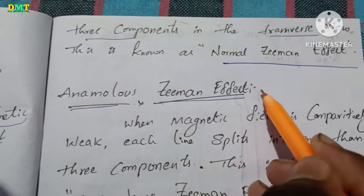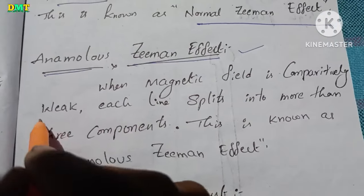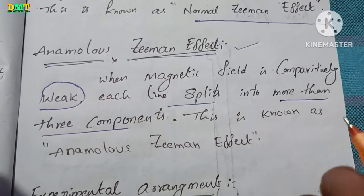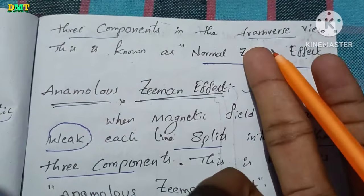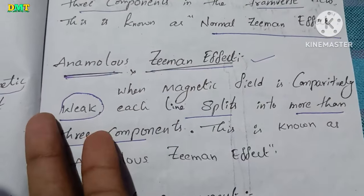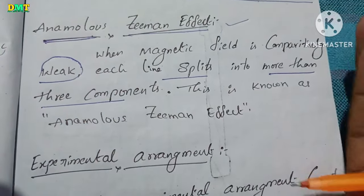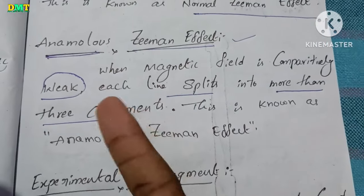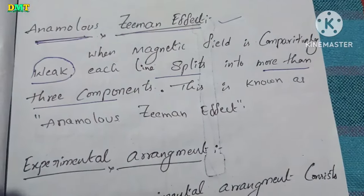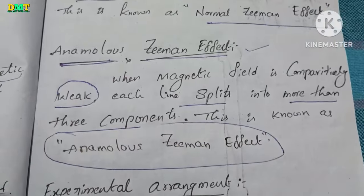Anomalous Zeeman Effect: when the magnetic field is weak, each spectral line splits into more than three components. In the Normal Zeeman Effect there are three components, but in the Anomalous Zeeman Effect the magnetic field is weak and each line splits into more than three components.